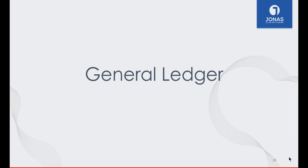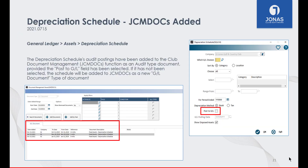Now let's take a look at General Ledger. You can now have Depreciation Schedules added to the Document Management module. If the Post to GL field is flagged, the Depreciation Schedules audit posting will be added as an audit type document. If not selected, the schedule will be added to JCM docs as a new GL document type. The Advanced Document Management module is an add-on that allows you to store and access documents across different modules in Jonas. For more information, please reach out to your account rep.